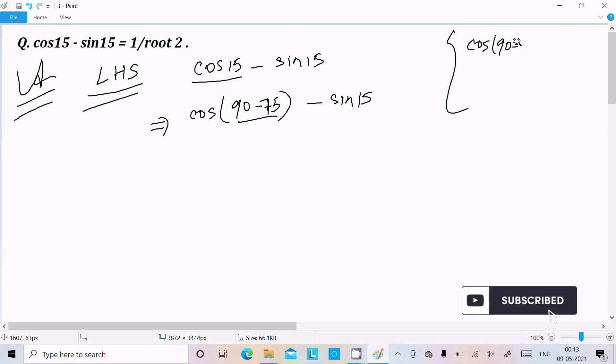Using the formula cos(90° - θ) = sin θ, we can write sin 75° - sin 15°.